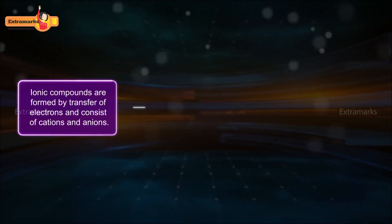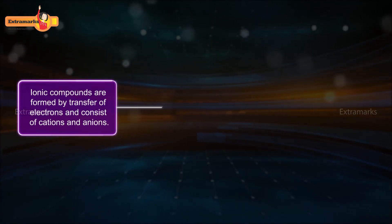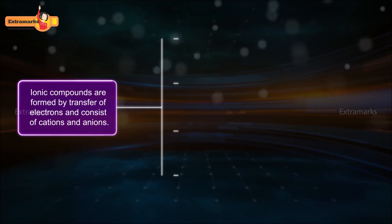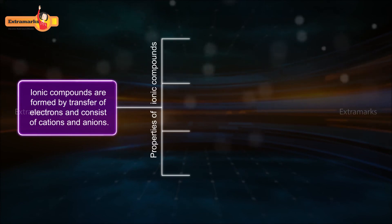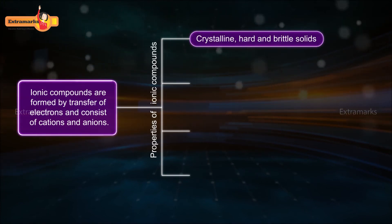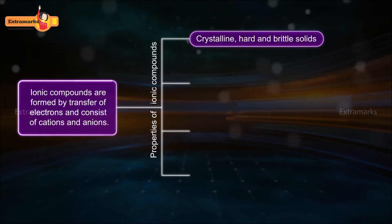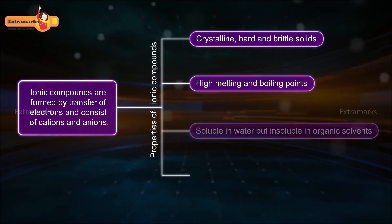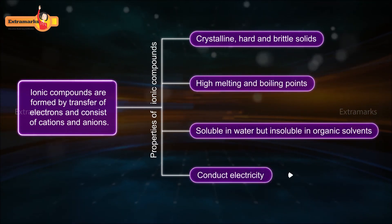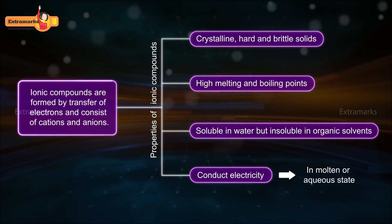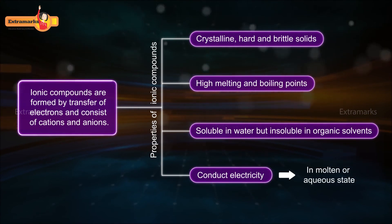In summary, ionic compounds are formed by transfer of electrons and consist of cations and anions. They are crystalline, hard, and brittle solids with high melting and boiling points. They are soluble in water and conduct electricity in the molten and aqueous state.